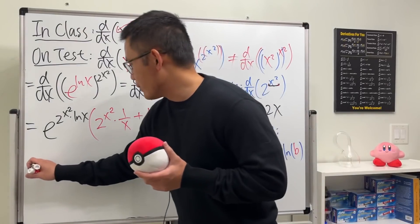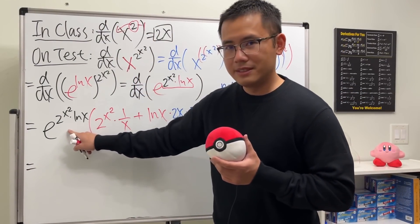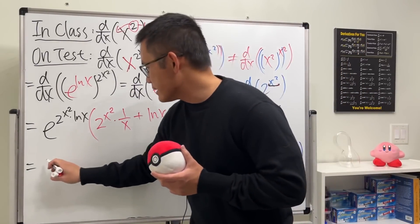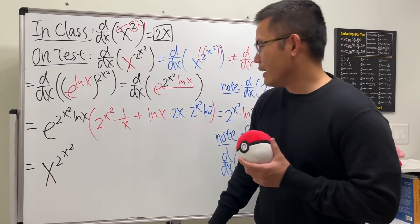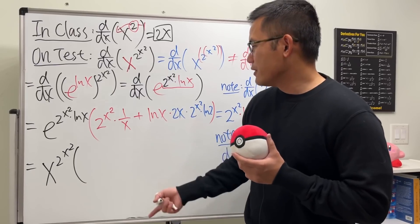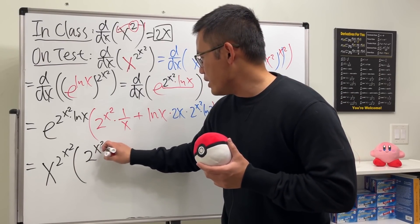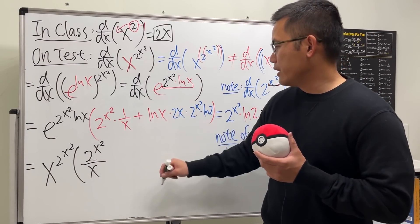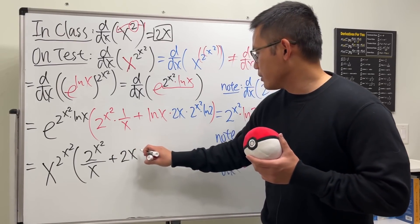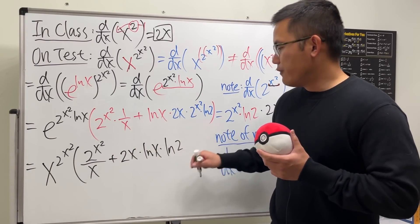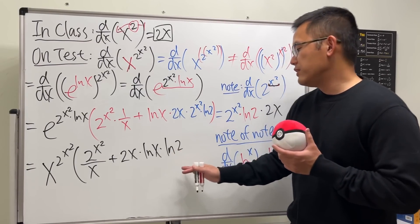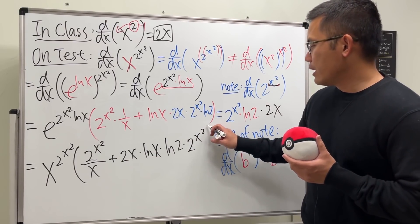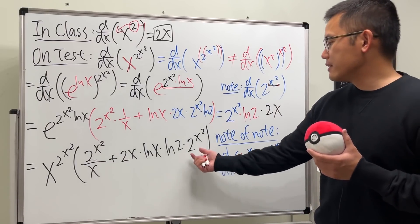Now let's write the complete answer. The e^(2x² · ln x) out front simplifies back to x^(x²) — that's just the original expression. So we write x^(x²) multiplied by the product rule result. For the first term we get 2^(x²) over x, and for the second term we put polynomials first: 2x · ln x · ln 2.